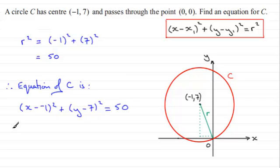I'm just going to clean this up and you've got (x + 1)² + (y - 7)² = 50. There's no real need to expand the brackets, I think. Just leave it like that, should be fine.